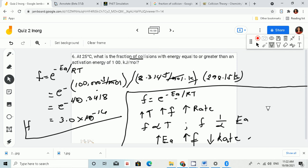So, the fraction of collision is directly proportional to the temperature and inversely proportional to Ea.